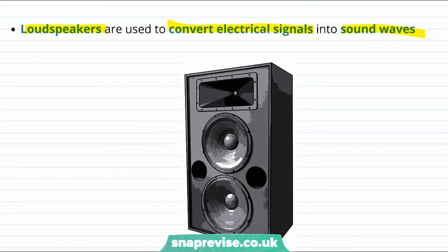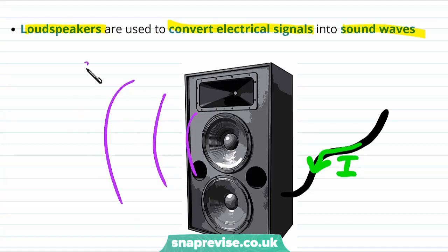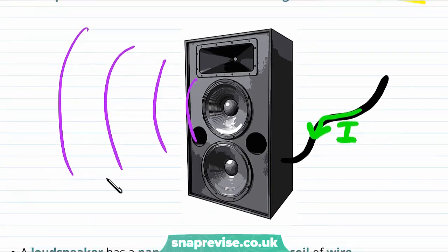So typically a loudspeaker is connected to a wire. An electrical signal or a current comes down the wire towards the speaker, and the speaker turns this current into a sound wave. I'm representing a sound wave here by drawing its wave fronts.